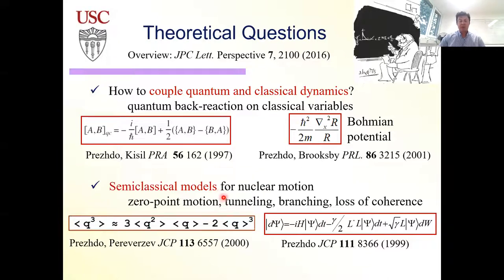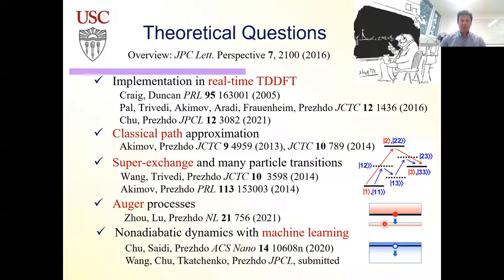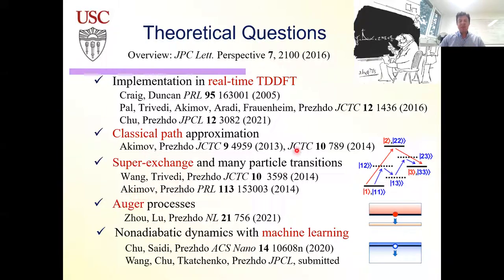We also wanted to capture nuclear quantum effects such as zero-point energy, and decoherence was important. More recently we've been doing more practical developments — implementing this in real-time TD-DFT, introducing the classical path approximation, which is quite useful. The assumption is that thermal fluctuations dominate and are more important than energy differences between different electronic states. We also developed methods for many-particle transitions and super-exchange. This year we explicitly introduced Coulomb interactions to model Auger-like processes, and now we're incorporating machine learning to run longer simulations.